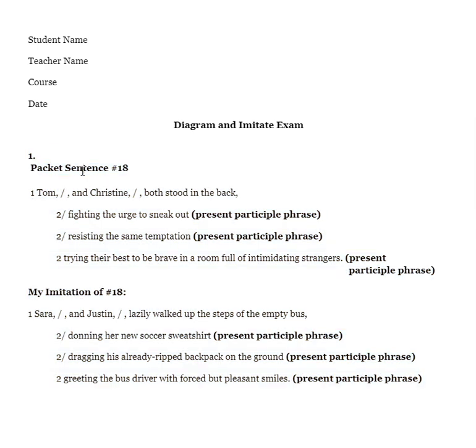This is an example of one. This is sentence packet 18 about Tom and Christine. This is the original sentence as it appears in the packet. And down here is an example of what it looks like if you were to imitate that sentence. It's a 1-2 slash 2 slash 2, present participle phrases in every single one of these free modifier spots.